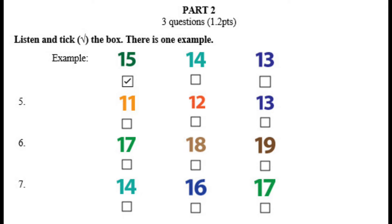Now listen again. Five. How many books are there? Thirteen books. Six. There are eighteen dogs. Eighteen? Okay. Seven. How many circles are there? Fourteen circles.